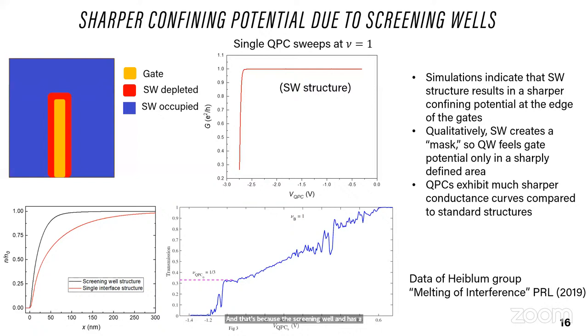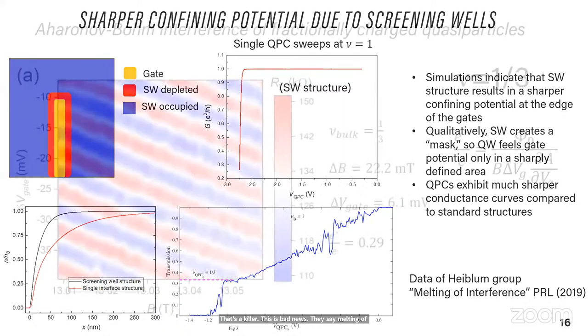And the signature of that, I haven't gotten to it yet, this is what a QPC sweep looks like now. I'm just pinching down the QPC at nu equals one and it's quantized. There's one unit of conductance, one quantum of conductance, and it stays that way until it drops to zero. And that's because the screening well has a sharper density profile. For comparison, here is another QPC in a more standard structure from another very big group doing lots of good stuff, the Heiblum group, where it's at nu equals one but this is what their typical QPC curve would look like starting out at one.